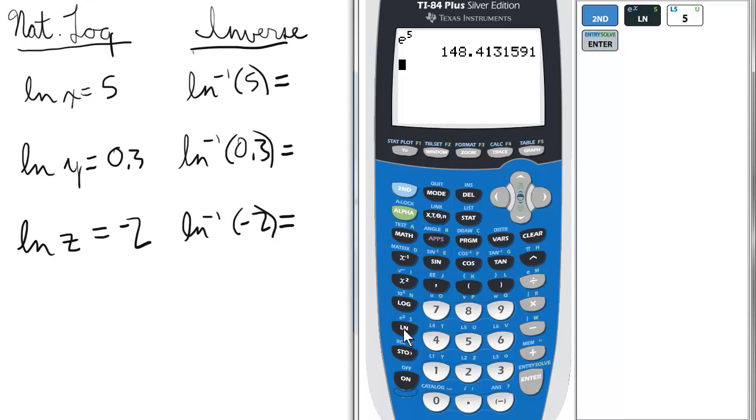To show you that, we can take the ln of our answer and we get 5.